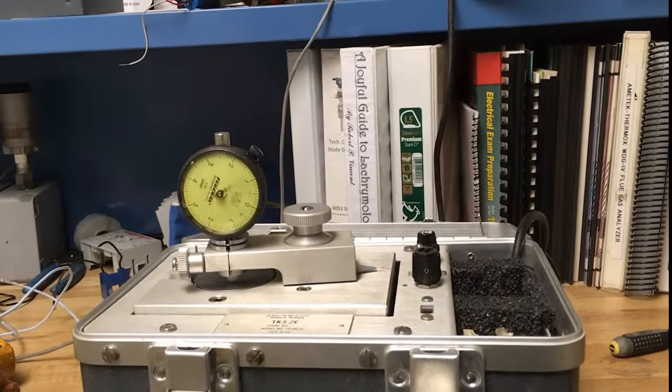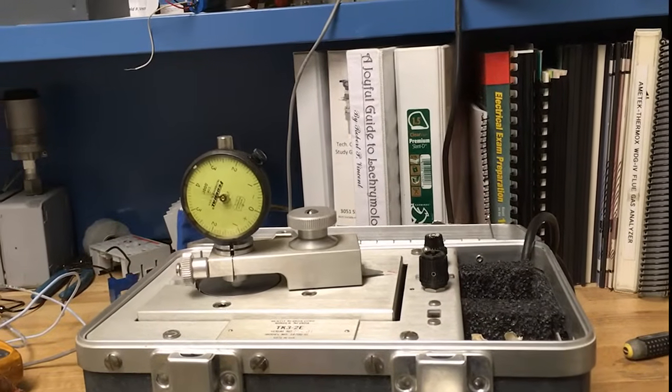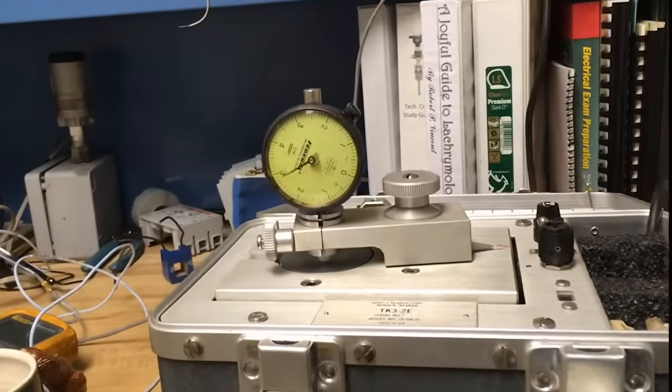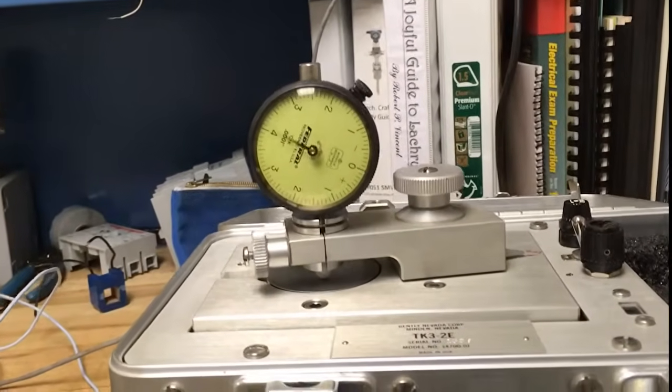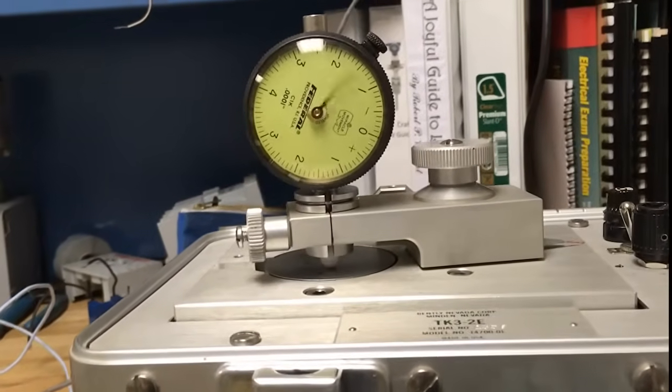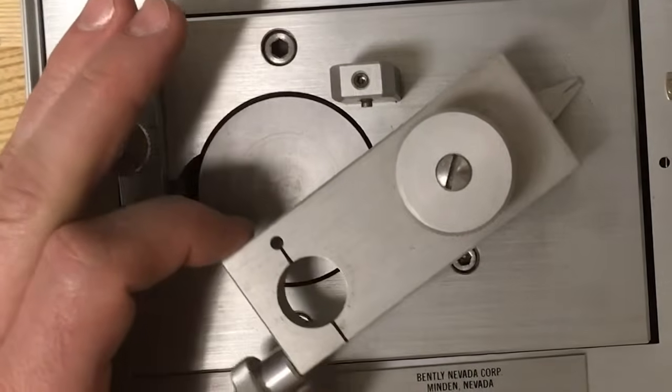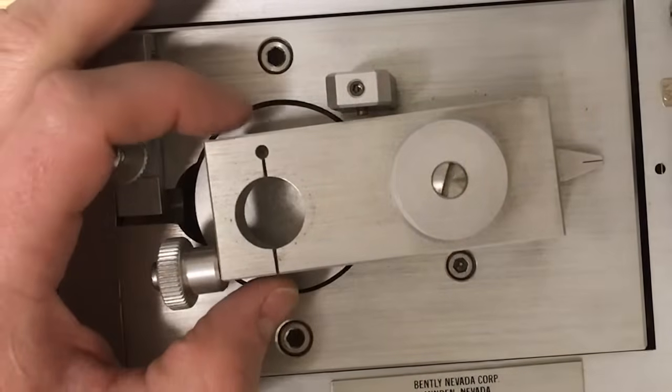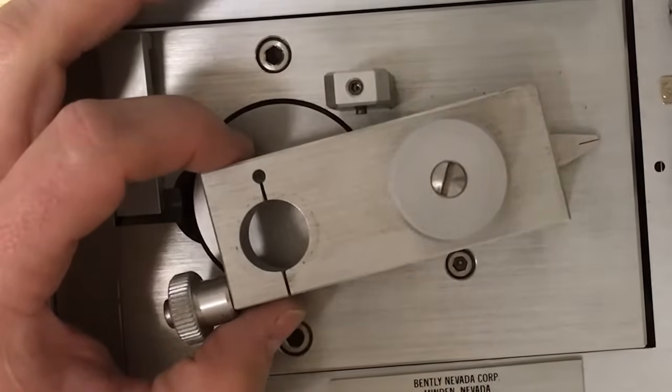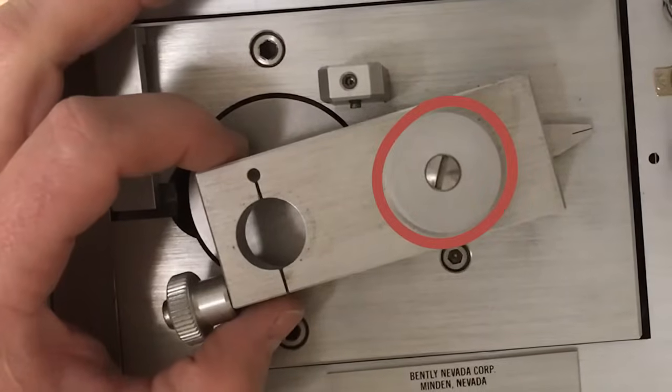The process begins by setting up the test device. If your unit has a reference mark for the desired amplitude of oscillation, place it on 5 mils. If there is no indication, hold the receiver over the center of the disc, then rotate approximately half the distance to the edge of the disc. Secure the swing arm in place.